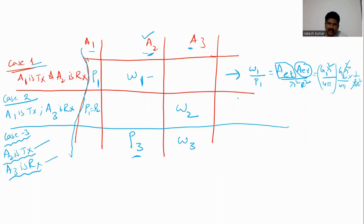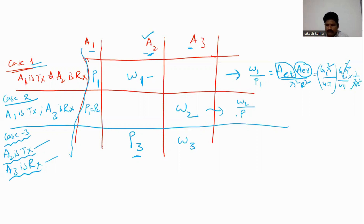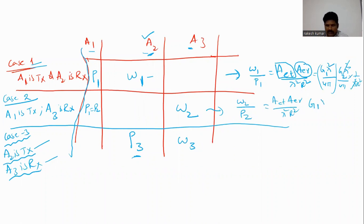For Case 2, the received power W2 and transmitted power P2 give: W2 / P2 = (Ae_t × Ae_r) / (λ² × r²). With A1 as transmitting antenna, Ae_t = g1 × λ² / (4π), and with A3 as receiving antenna, Ae_r = g3 × λ² / (4π).